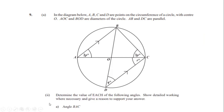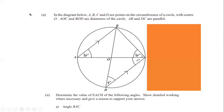Part two says determine the value of each of the following angles, showing detailed working and giving reasons. We need to calculate angle BAC. From part one, the angle in a semicircle equals 90 degrees, so angle B is 90 degrees. The total angles in a triangle — 90 degrees, 2p degrees, and 3p degrees — equal 180 degrees. So: 90 + 2p + 3p = 180, and 2p + 3p gives us 5p.